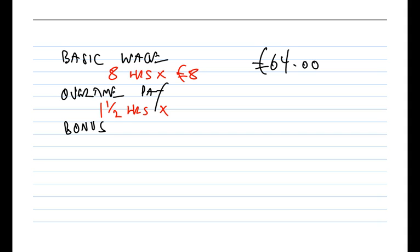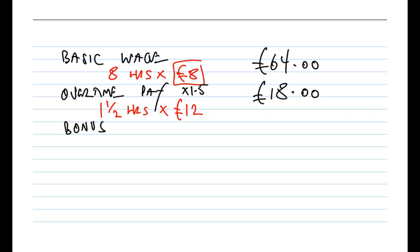Remember, overtime is paid at a premium. Overtime is paid at time and a half. So they take the normal basic wage of £8 per hour and add an extra half to that. Half of eight is another £4. So the overtime rate will be £12 per hour - multiply the £8 by one and a half to add on the extra half. One and a half hours at £12 per hour gives an overtime pay of £18 in total.